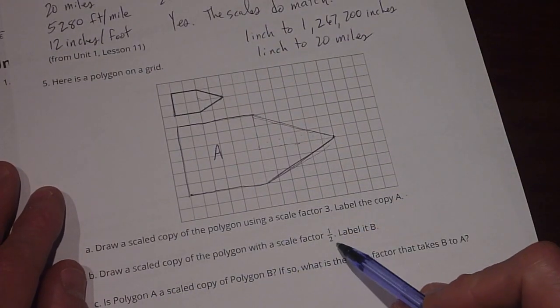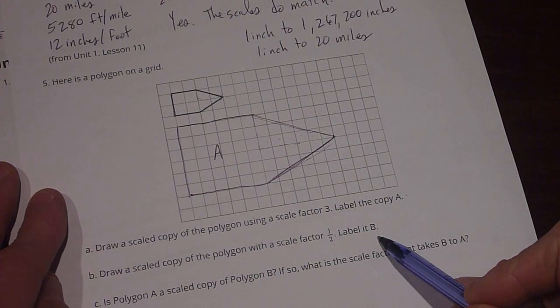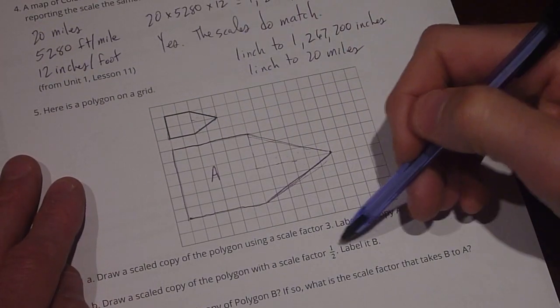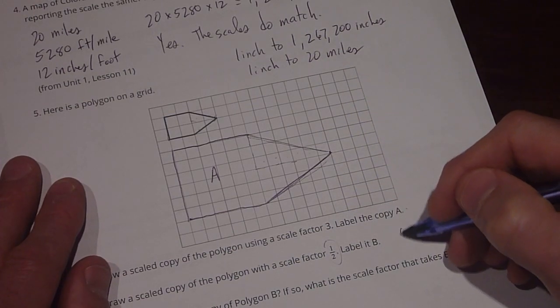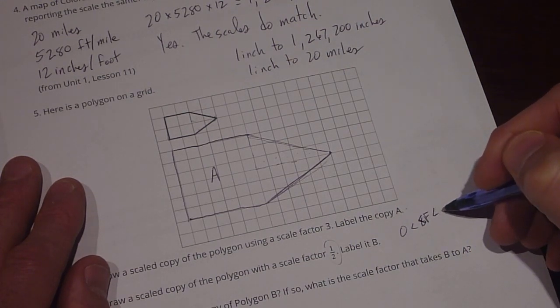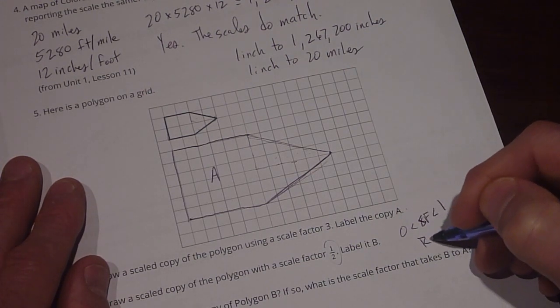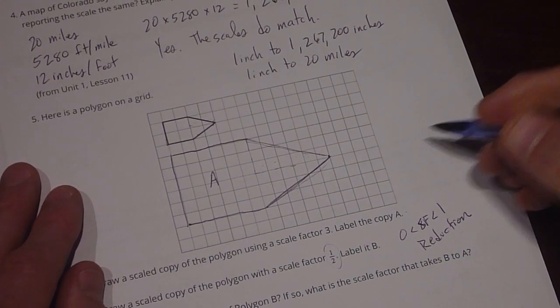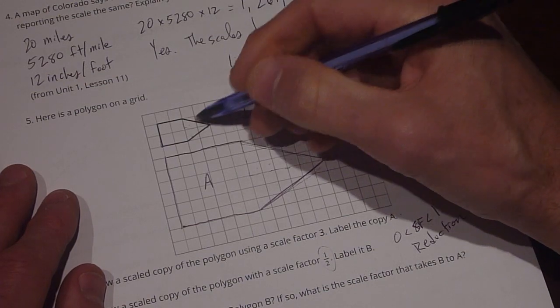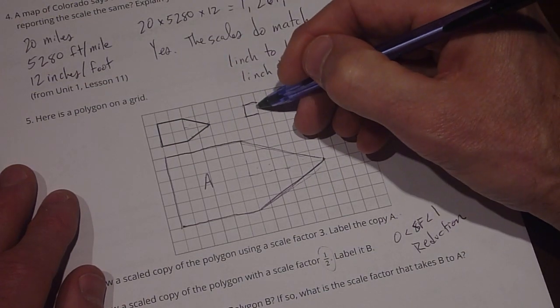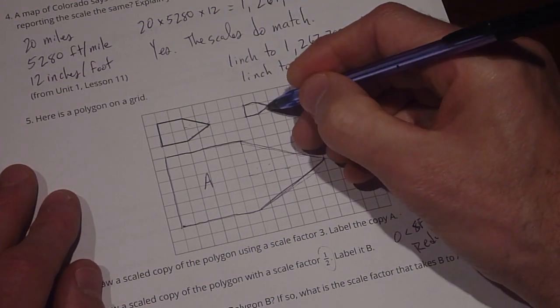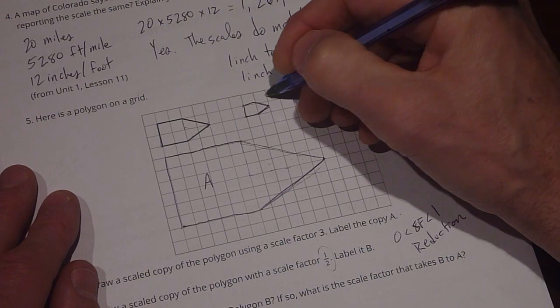Now this is draw a scaled copy of the polygon with a scale factor 1 half. Label it B. Now everything here needs to be shrunk by 1 half because the scale factor is 1 half. And we know that when a scale factor is between 0 and 1 it's going to be a reduction. So it's going to be smaller. So this 2 goes to 1, 1 and 1, and instead of 1 it goes down by 1 half and over 1. And then this is going to be B. We'll put the B over there.